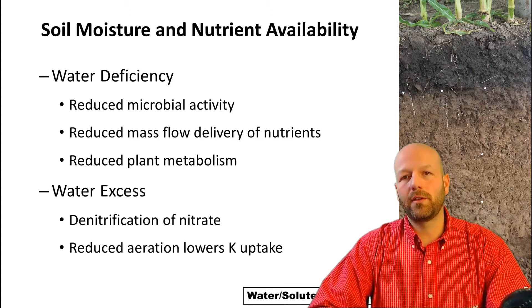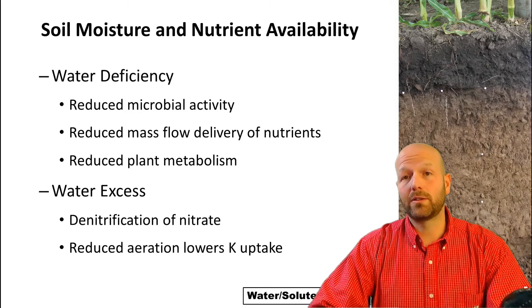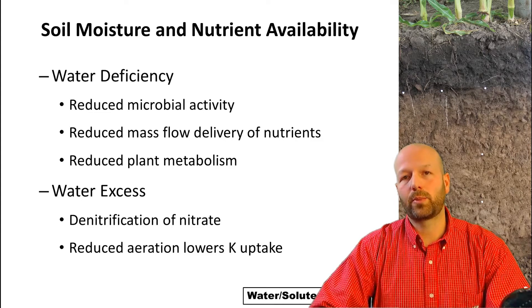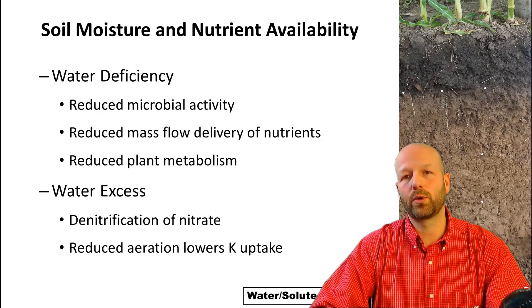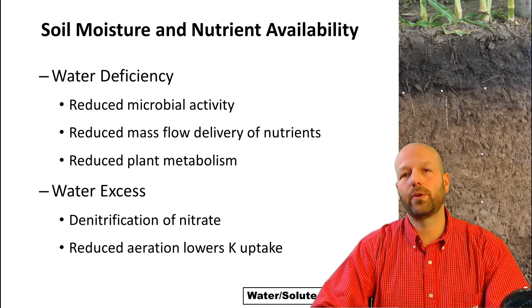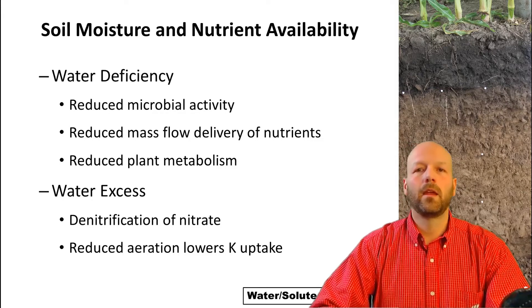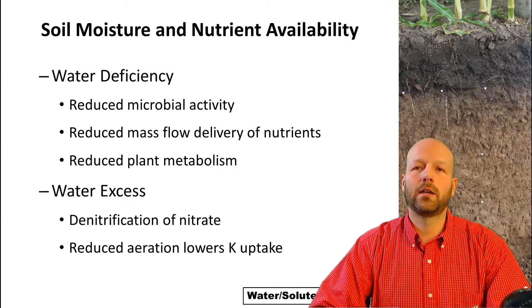So why is this important? A lot of these water relations not only affect the water available for plants to grow, but also the availability of nutrients. If water is deficient, a lot of nutrients are taken up by plants with the water, so that presents a problem. Limited water also reduces microbial activity — microbes are very important for breaking down organic matter and other processes in the soil — so we'd actually reduce nutrient availability. This is referring to mass flow delivery of nutrients dissolved in water. It would also reduce the metabolism of the plant because if it's water stressed, it's not going to be functioning properly.